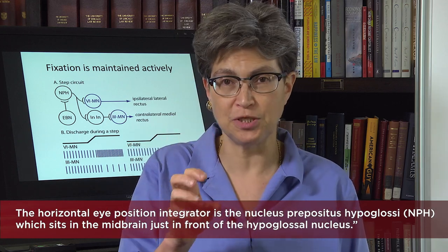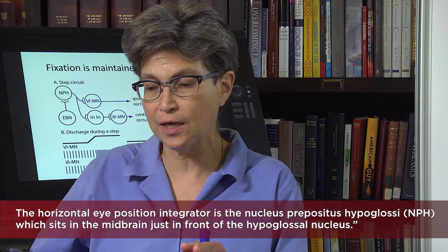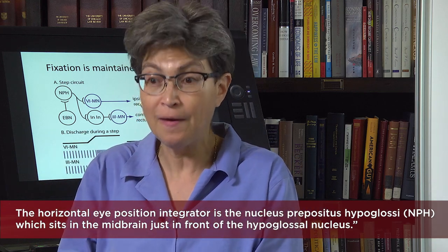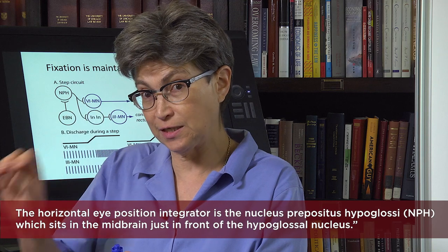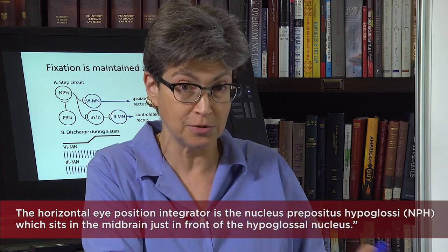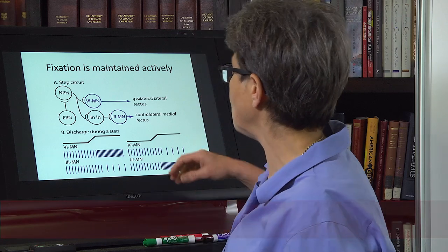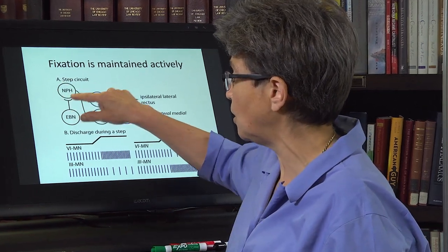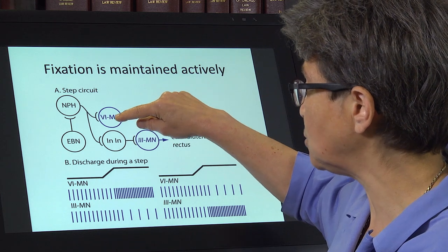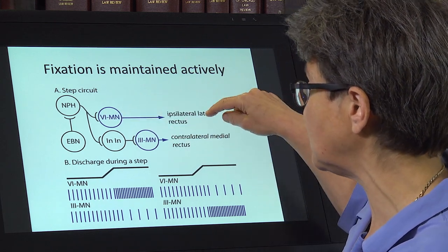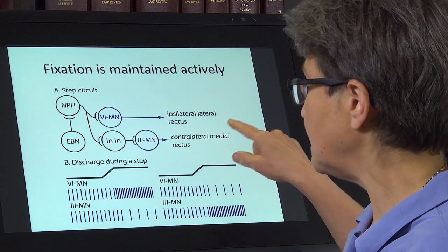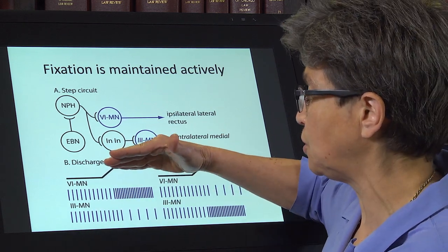This integrator codes for eye position. It's going to say: we've made all these saccades, so that means our eye position should be in this place. So it's going to maintain eye position by feeding in the correct amount of excitation to these muscles and the correct amount of lowered excitation to allow the other muscles to relax. From this eye position center, information goes both to the abducens motor neuron that innervates the lateral rectus and also to the internuclear interneuron that innervates the contralateral medial rectus, allowing one to keep the position where you want it.